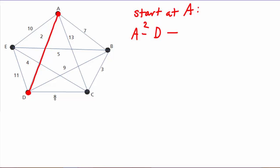Which one is the cheapest to get to from D? From D you could go to C, that would cost us 8. You could go to B, and that would cost us 9. Or you could go to E, and that would cost us 11. So the next cheapest place to go is C.